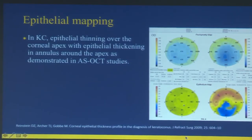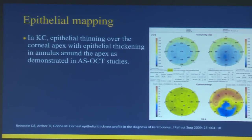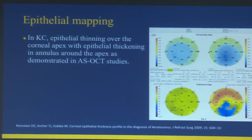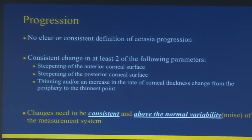Epithelial mapping is another tool to diagnose early keratoconus. It's still evolving, but papers from Reinstein suggest it is a quite effective way of diagnosing early keratoconus.